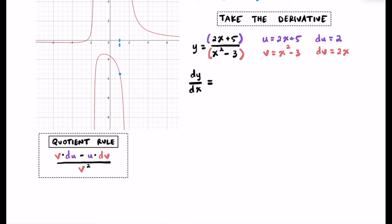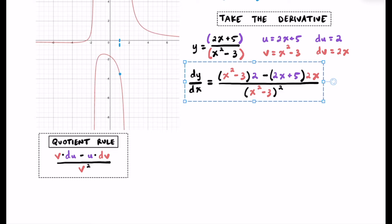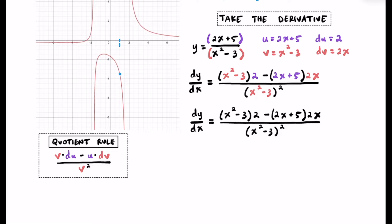Substituting each piece in, we get v times du minus u times dv, over v squared. This derivative tells us the instantaneous rate of change — the slope — at any x value. For this problem, we only care about the slope when x equals 1, so let's evaluate this derivative specifically at x equals 1.